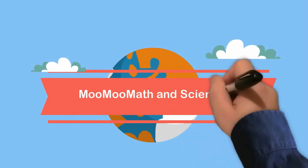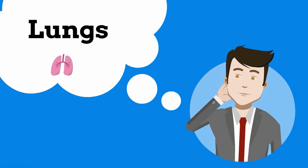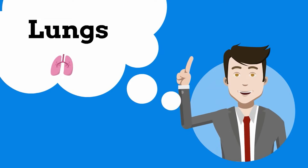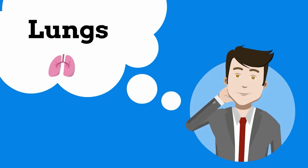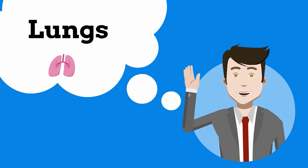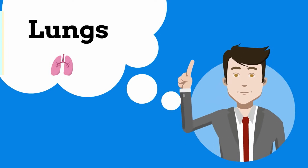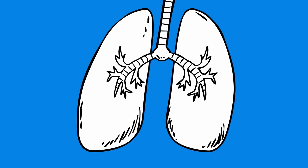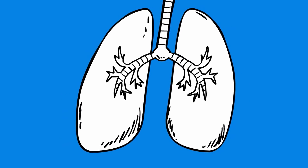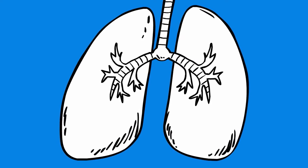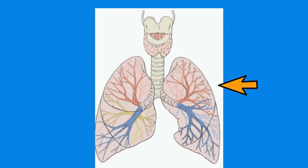In this video I would like to talk about the lungs. The lungs are part of the respiratory system. The respiratory system breathes in oxygen from the atmosphere and transfers this oxygen into the bloodstream. It also helps the human body release carbon dioxide from the bloodstream into the atmosphere. You have two lungs — a left and right lung — and they are located beside your heart.